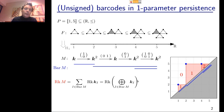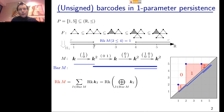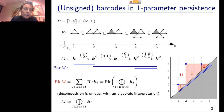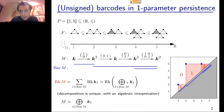To compute the rank invariant from index 2 to index 4, you count the number of intervals in your barcode that connect the down-set at 2 to the upset at 4. More fundamentally, this tells us the algebraic structure of the module: in the one-parameter case, the module decomposes as a direct sum of interval modules, and these are exactly the ones that appear in the decomposition of the rank invariant, since the rank invariant is additive on direct sums.